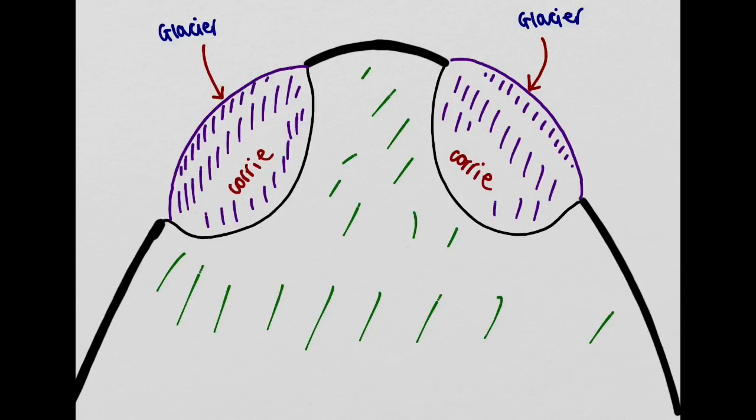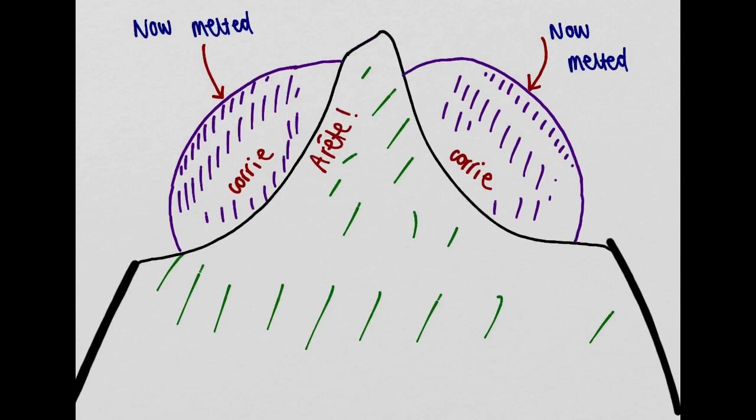All these processes that I go through in that video, these two backwalls are starting to merge together and through continued erosional processes we get a merging of the backwalls to develop and establish this very steep knife-edged ridge between the two cori landforms that we refer to as an arete.